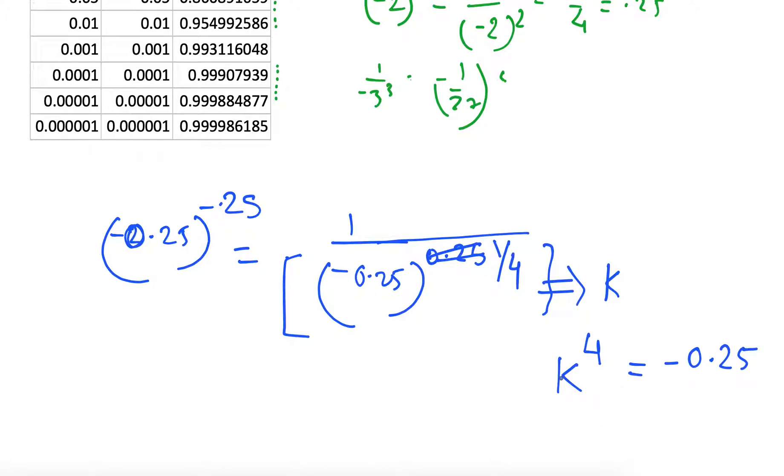But we know that for positive numbers, if it's an even power, it will be positive. For positive, even for odd, it will be positive. But for even negative, if we raise some even power, then it will be positive. But here, after we raise to the power 4, we need to find such k that it becomes minus 0.25. So it's not possible on a real line. We will enter into imaginary numbers or complex number domain.